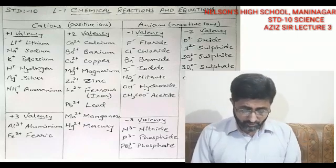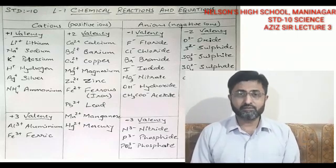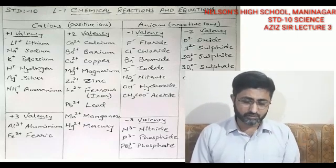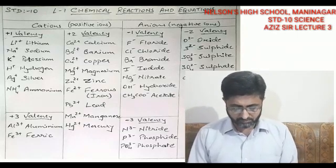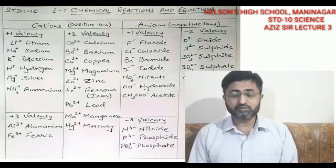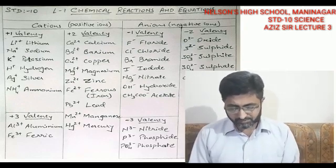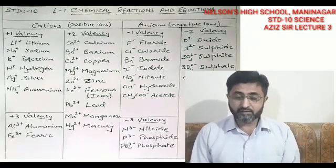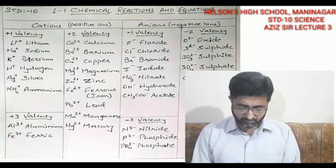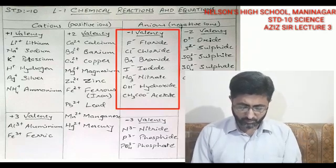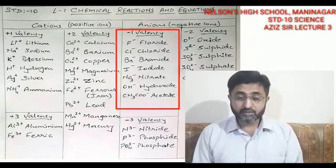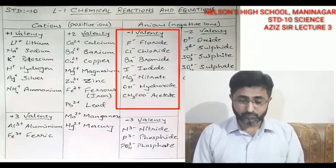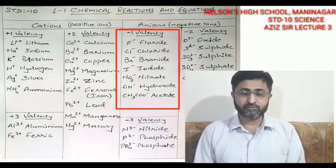You need to learn all these positive ions — cations — definitively. Now we move to negative ion valencies, that is anions. Minus one valency starts with fluorine: F− is called fluoride.